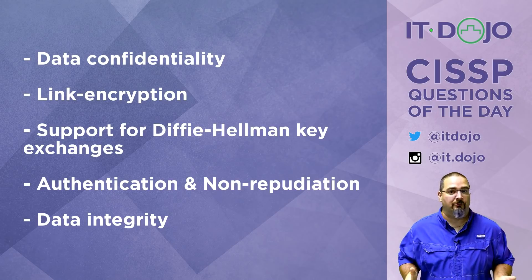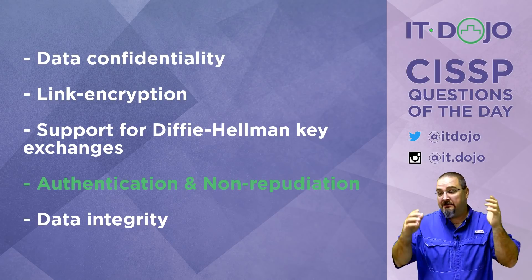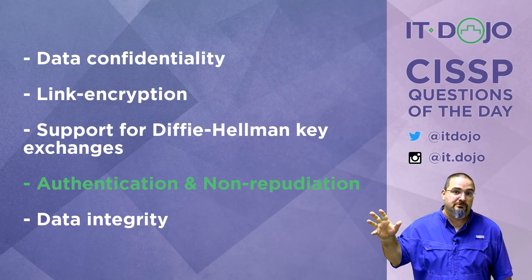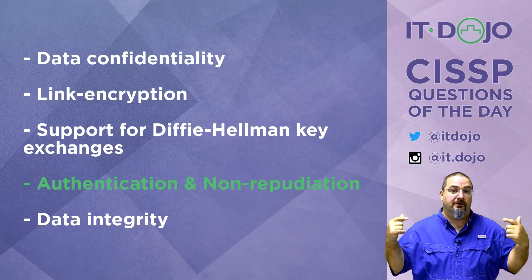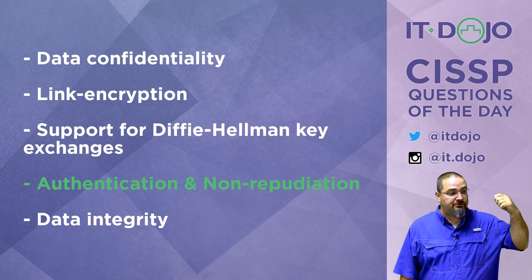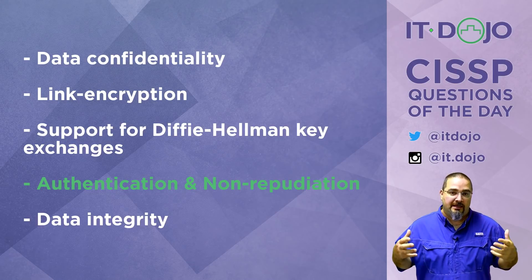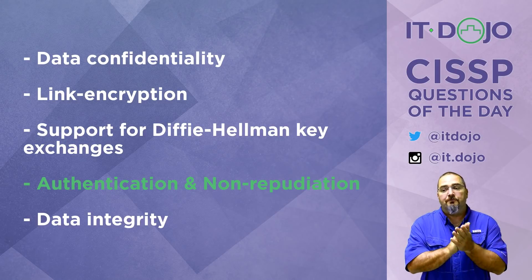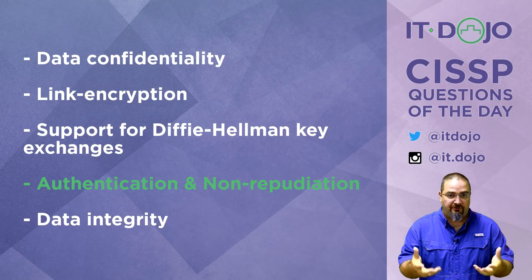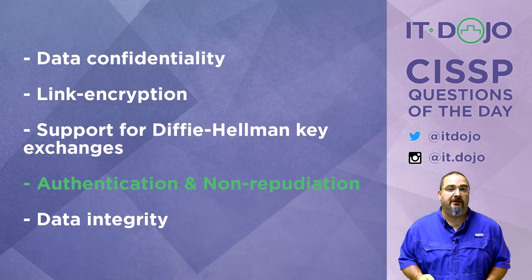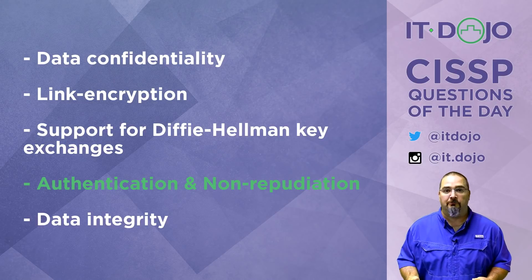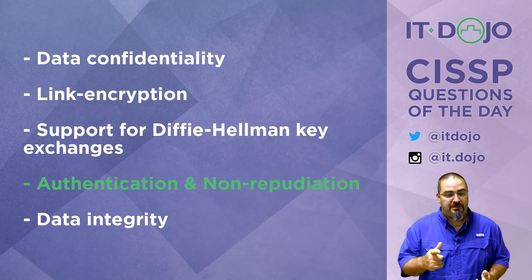Now we're getting somewhere — authentication and non-repudiation. That's what a public key infrastructure brings to the table. If you break this down to its most simple form: encryption algorithms — symmetric and asymmetric — provide confidentiality; hashing algorithms provide data integrity. But if you want assurance that the person who signed a file or encrypted data is actually who you think it is, you need a third-party mechanism of trust in the form of a public key infrastructure. That's what PKI brings you: origin authentication, individual user authentication, computer authentication, plus the corollary — non-repudiation. The inability for the other side to deny they did a thing. If you want to hold somebody accountable for email messages they sent or code they signed, that's what non-repudiation brings to the table, and a PKI creates the framework for that.